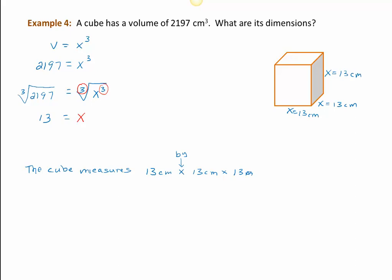So this x is 13, 13 what? The volume came in cubic centimeters, which means we need centimeters times centimeters times centimeters. When we talk about dimensions, we usually use the word by, which means multiplication. So we say 13 centimeters by 13 centimeters by 13 centimeters.